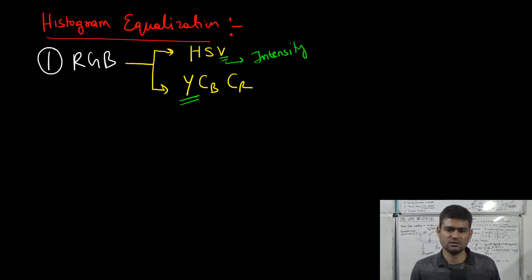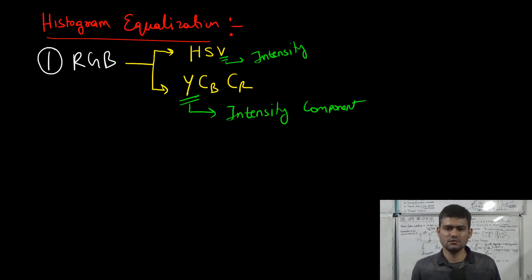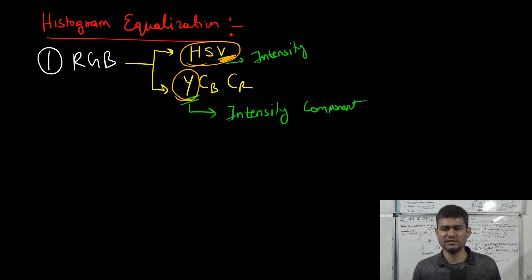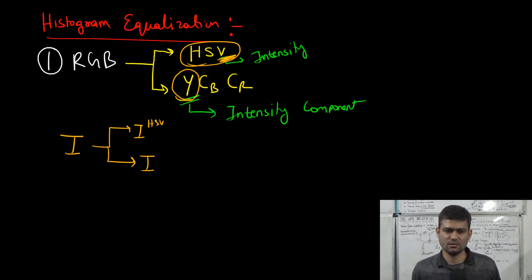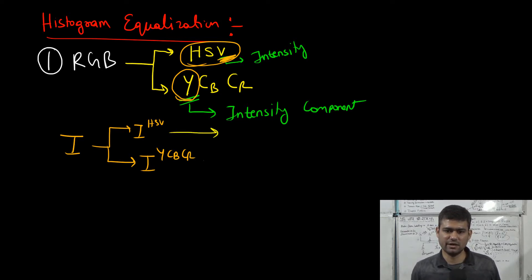In YCbCr, Y is the grayscale or intensity component. So we histogram equalize the V channel in HSV space, and we histogram equalize the Y channel in YCbCr space. Given an input image I, we transform it into either I_HSV or I_YCbCr and histogram equalize the V or Y component.